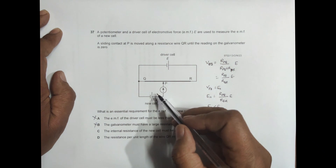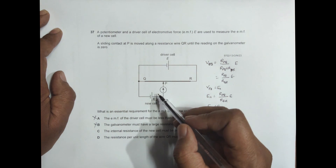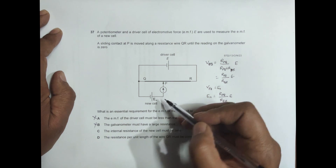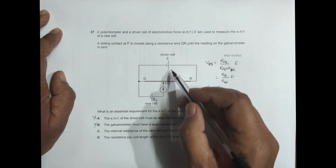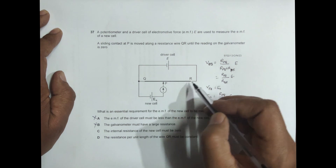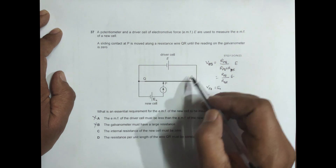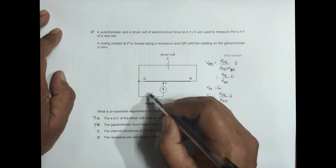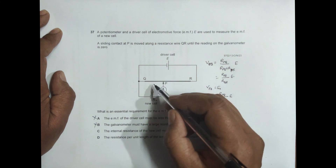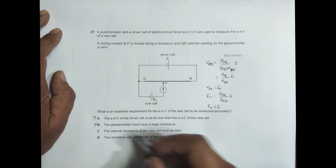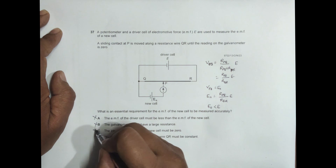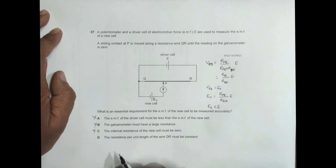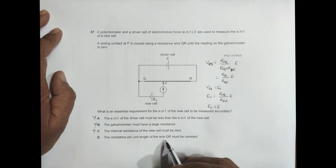The next option says the internal resistance of the new cell must be zero. We cannot say that is required, because whether the internal resistance is large or small, the main current flowing through the circuit is controlled by the driver cell. The new cell does not really contribute to the current flow in the main circuit, so this option is also untrue.